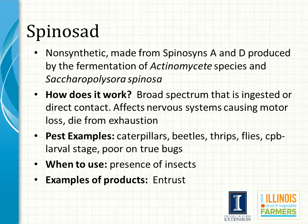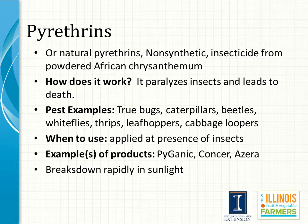Spinosad is a non-synthetic made from spinosin A and D, produced by the fermentation of the Actinomycete species Saccharopolyspora spinosa. It works as a broad spectrum for many insects by being ingested or through direct contact. It affects the nervous system, causing motor loss, and the insect dies from exhaustion. Pests affected include caterpillars, beetles, thrips, flies, and Colorado potato beetle especially in its larval stage. Spinosad is poor on true bugs. Because it needs direct contact or ingestion, this pesticide must be applied when insects are present. An example of Spinosad is the brand Entrust.